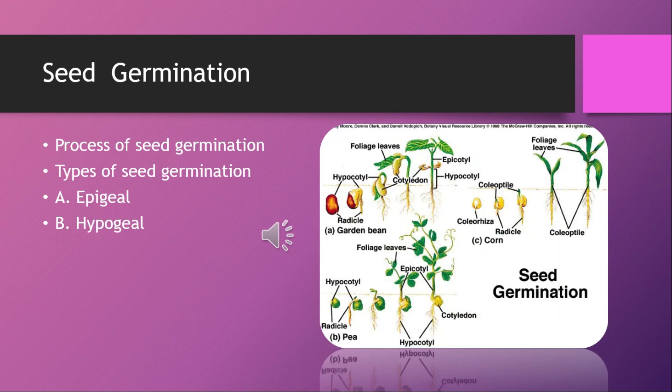Seed germination is a process by which the dormant — meaning inactive — embryo in the seed becomes active and grows into a seedling. Seed germination begins when the seed swells up by taking in water. This process is called imbibition. After that, the seed coat ruptures.